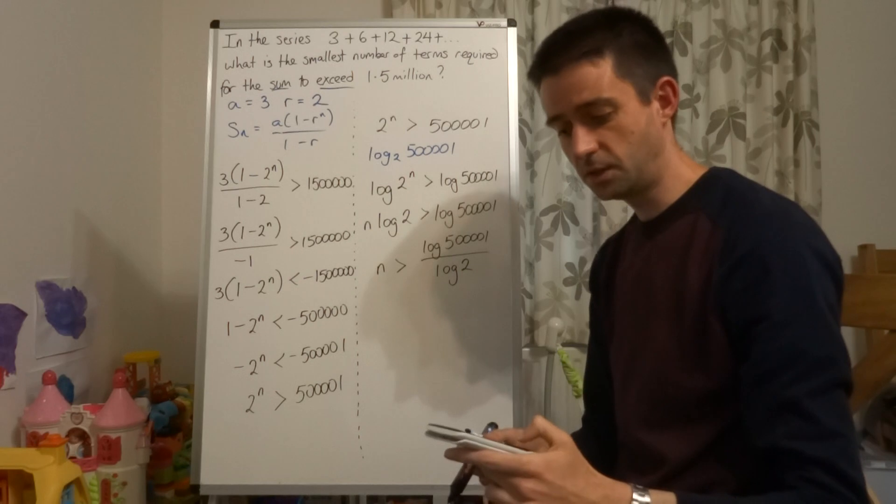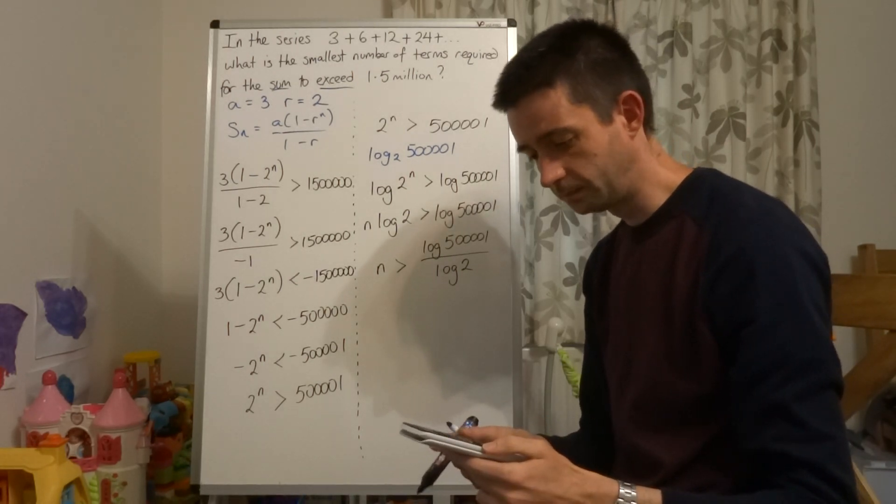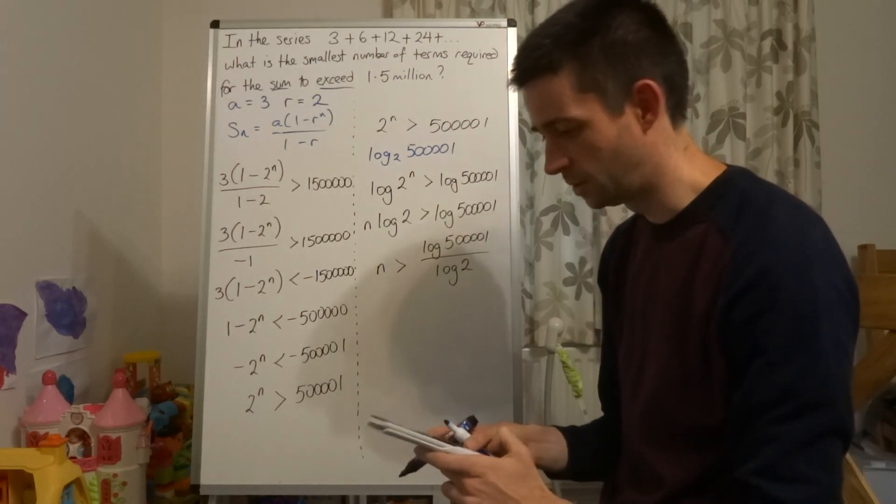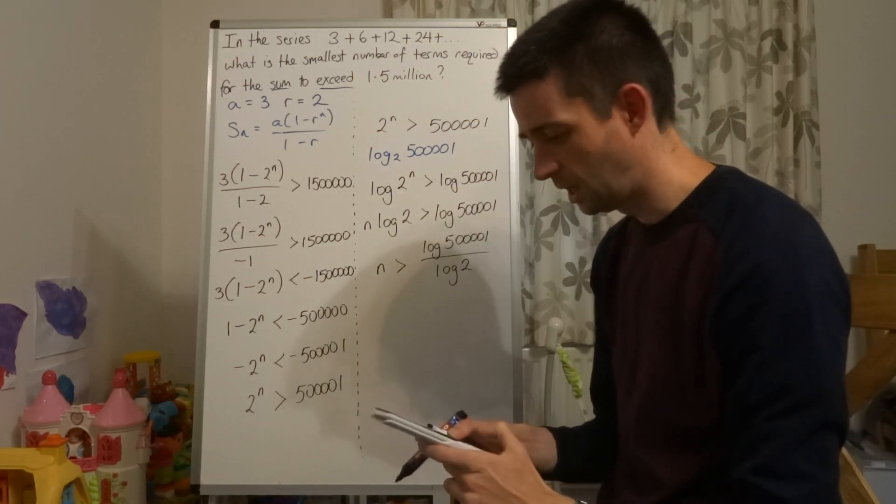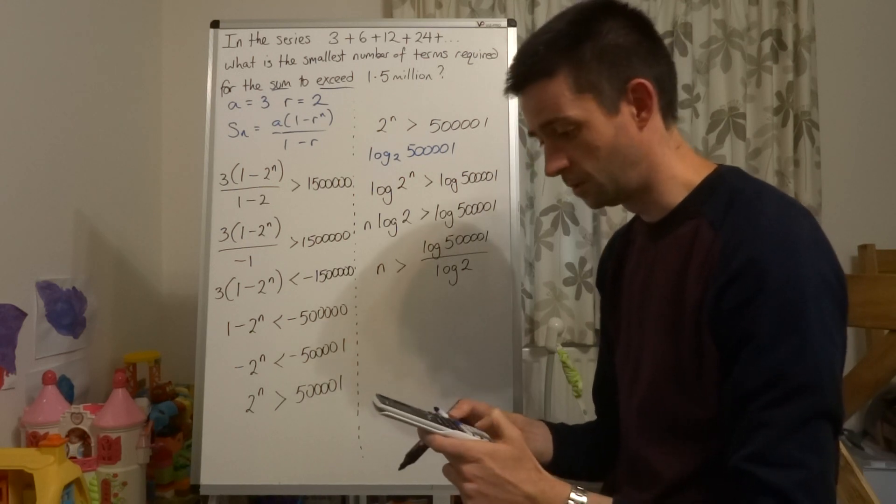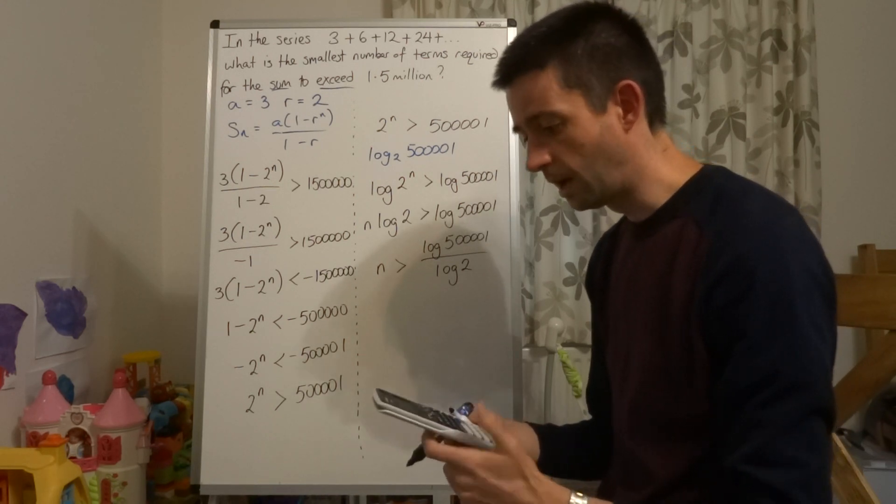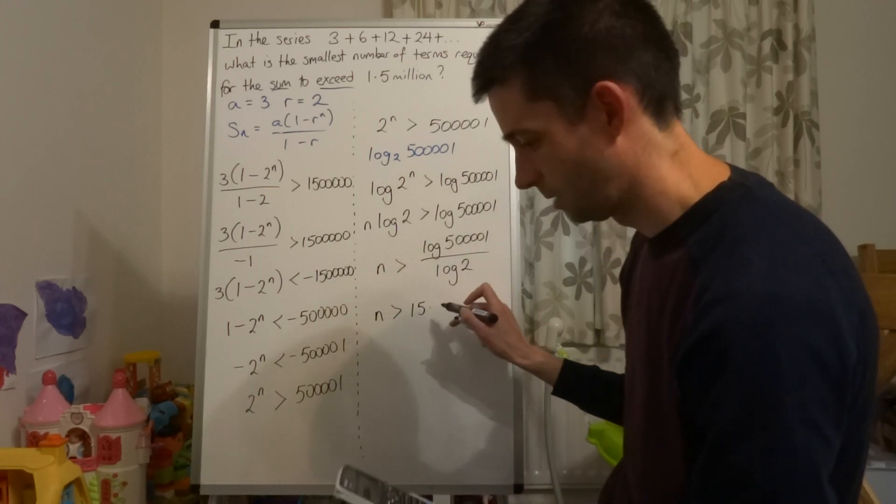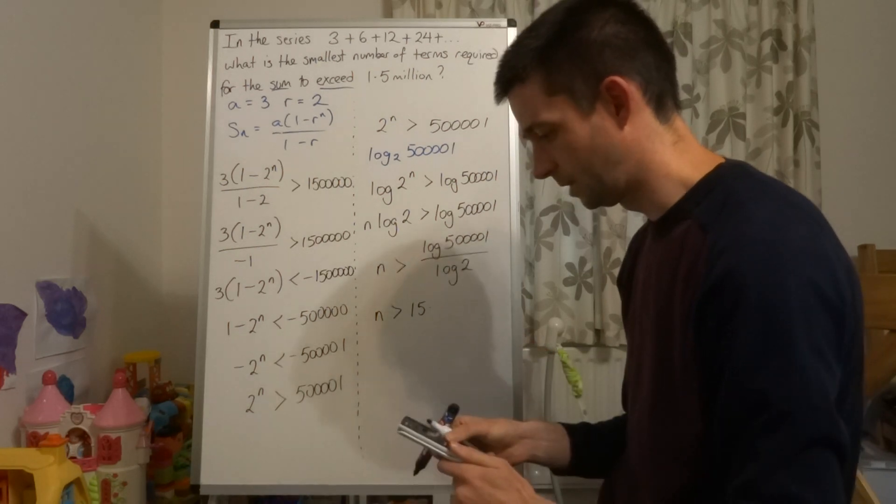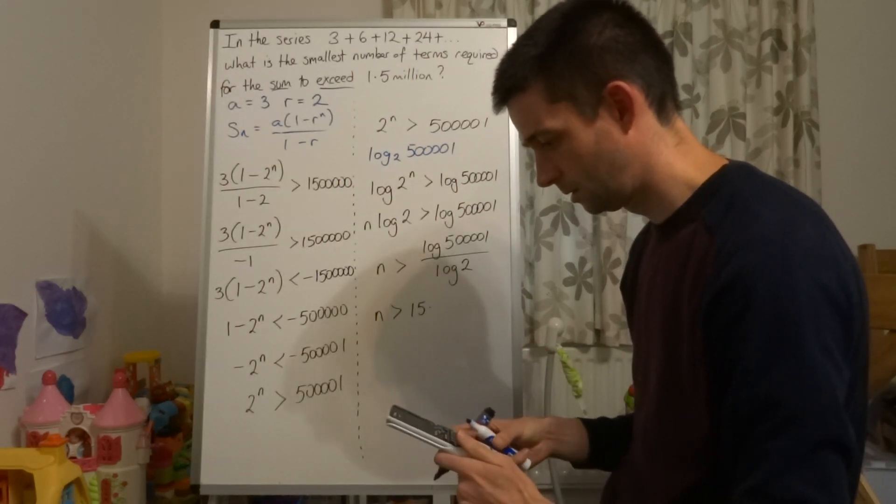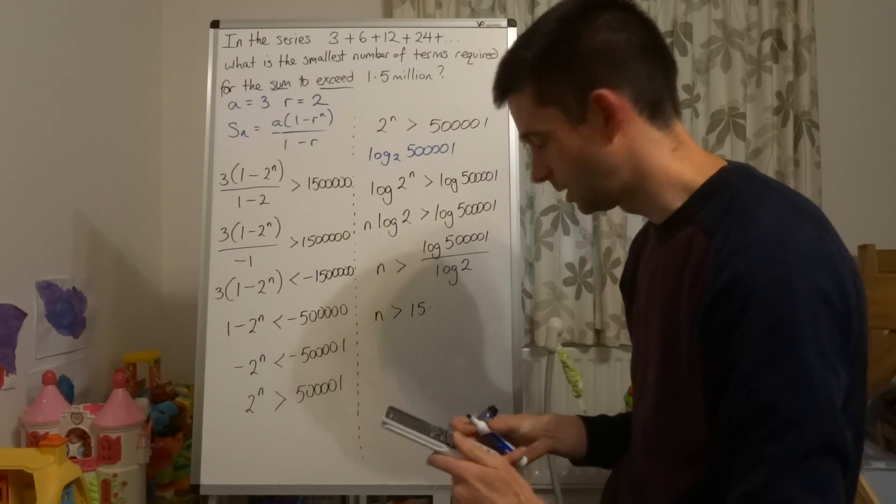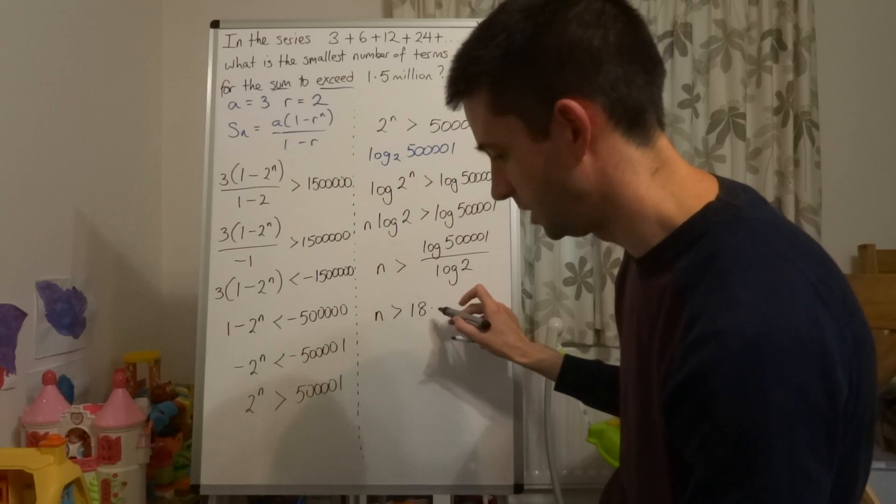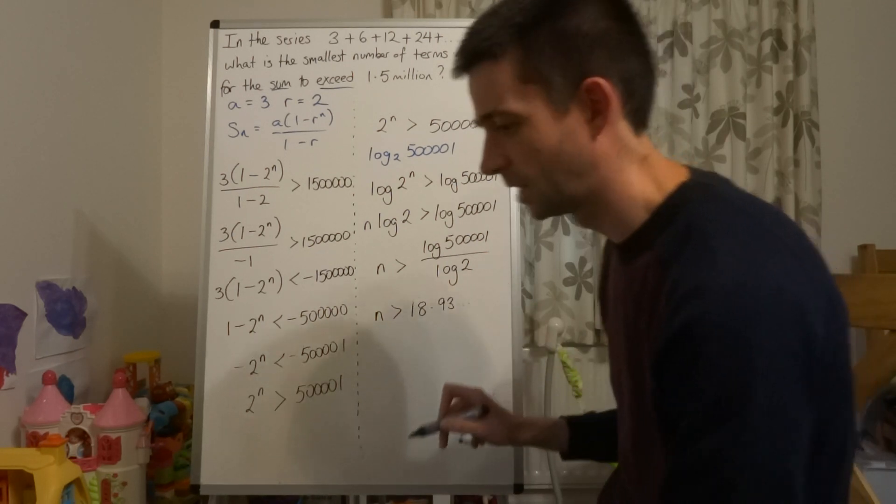So all I need to do now is using my calculator and the log button. It defaults to base 10, but it doesn't actually matter what base you use. And if you've done natural logarithms, ln will work with ln as well. And what we get is n is greater than 18.93, etc.